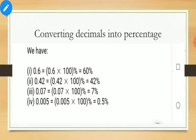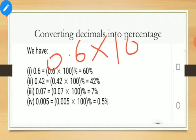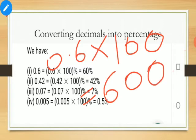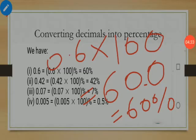Now converting decimals into percentage. If 0.6 is given, multiply by 100. The most easiest way is to write 6 and add two zeros, giving 600, then place the decimal after one decimal place since the original decimal is after one place. So the answer will be 60 percent.